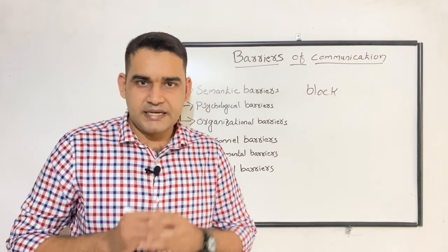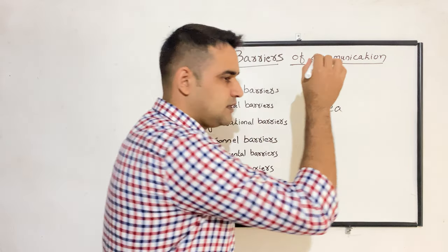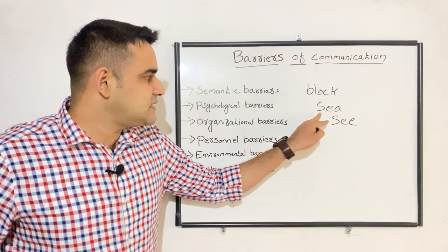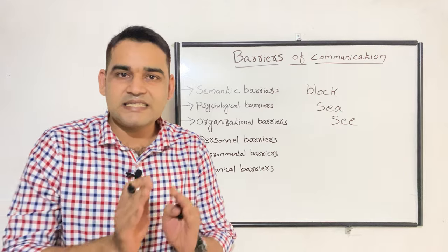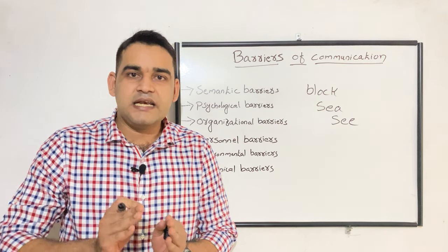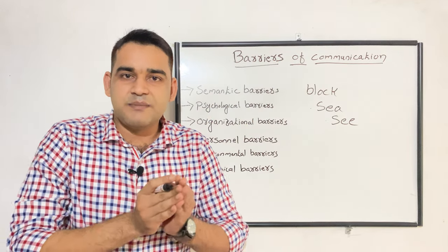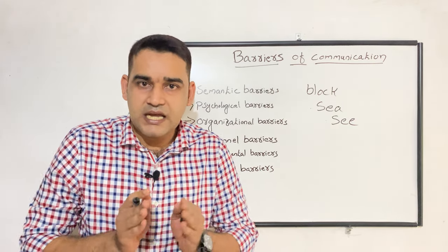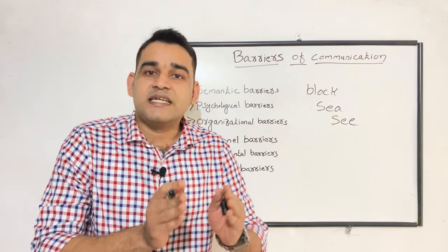The next semantic barrier is similarity between words. For example, if I say 'sea' — one meaning is the ocean, and another meaning is 'see' related to sight or view. There is a similarity between these two words, so confusion occurs. The sender is sending related to one meaning and the receiver is thinking of the other. That is the second semantic barrier: similarity between two words.